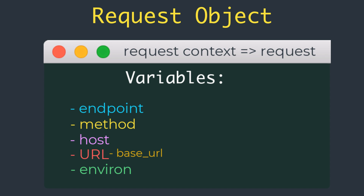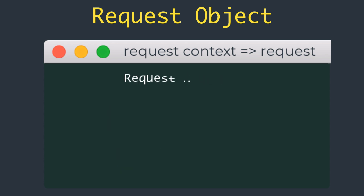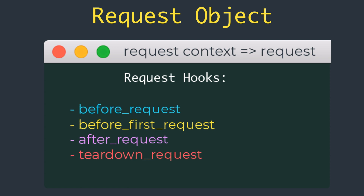Another important thing to know is request hooks. Sometimes it is useful to execute code before or after each request is processed. For example, at the start of each request it may be necessary to create a database connection or authenticate the user. Instead of duplicating this code in every view function, Flask gives you the option to register common functions to be invoked before or after a request is dispatched. Request hooks are implemented as decorators.